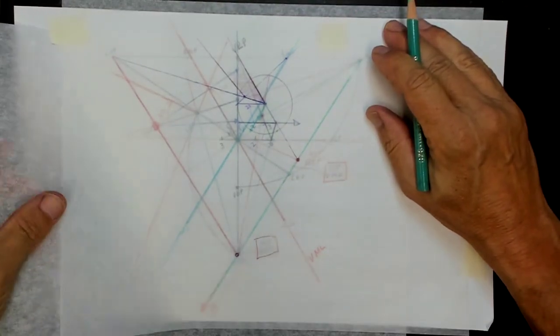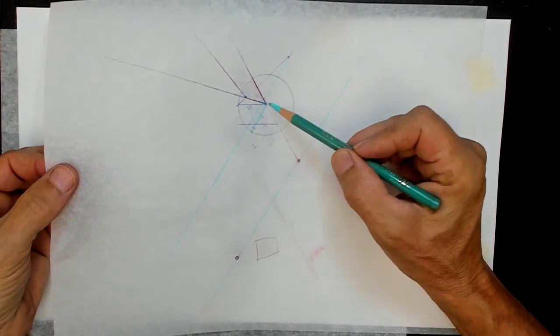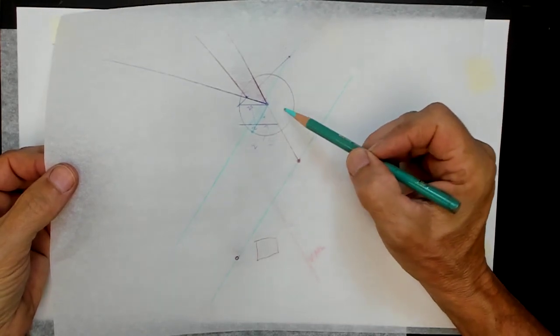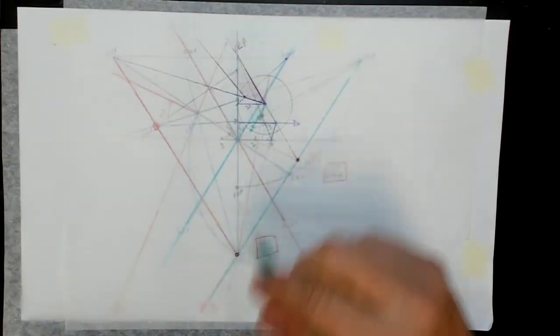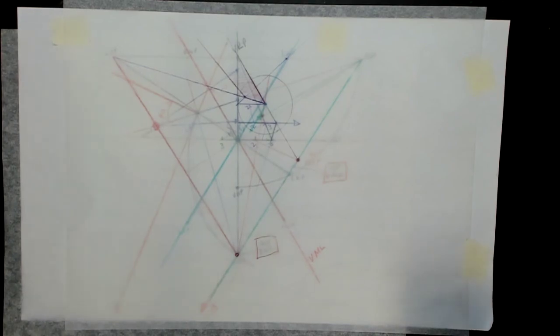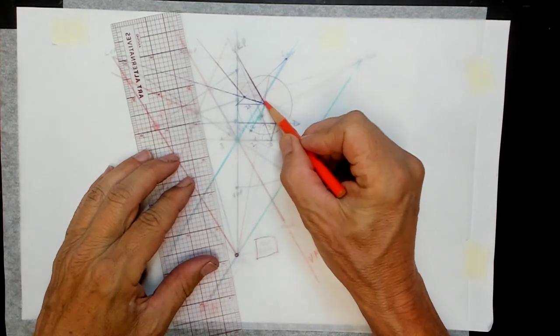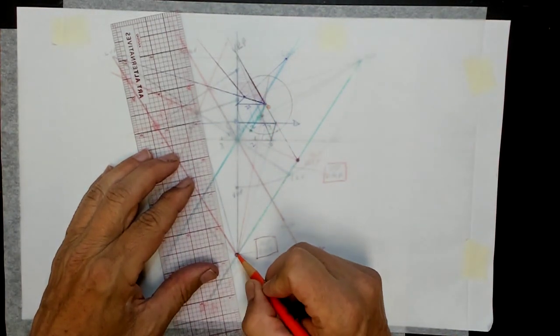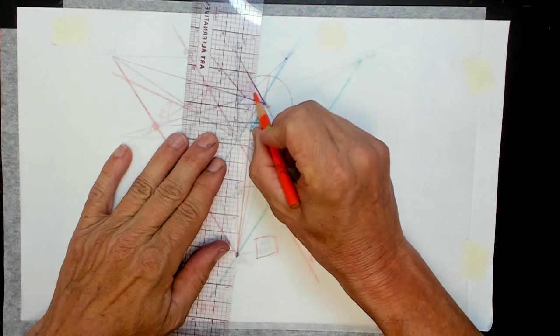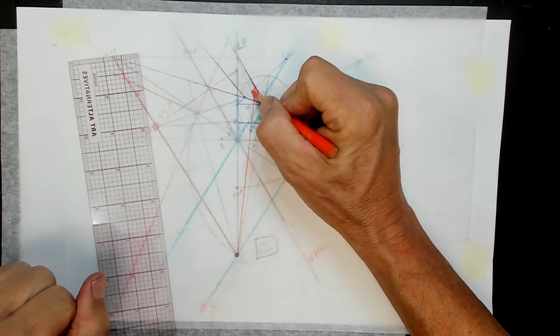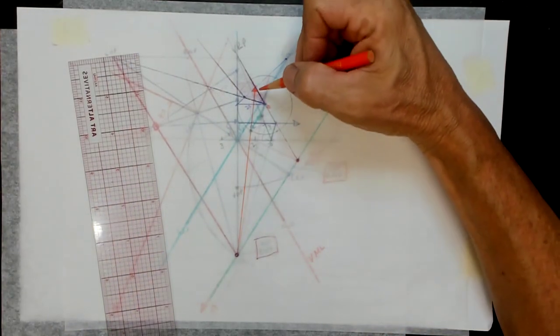This is two. Any line I draw from that center going out like that will be two. So here's two and here's my zero. It touches the line that I'm measuring. Here's my measuring point. I'm going to go through two and extend it out to hit that line, so that makes this two.